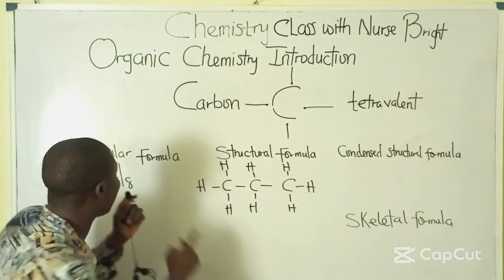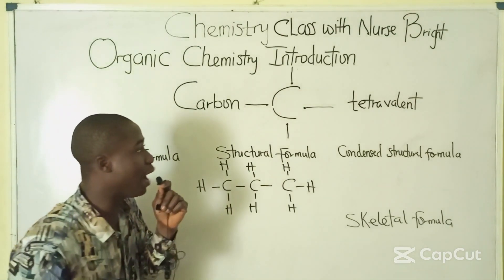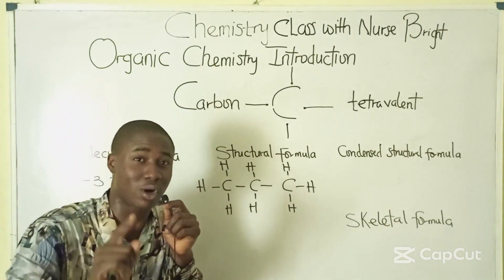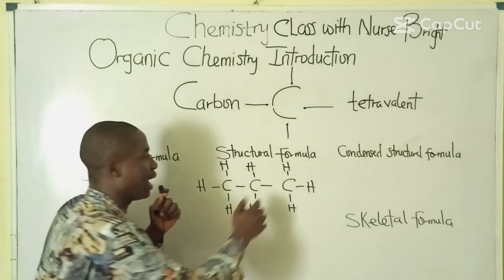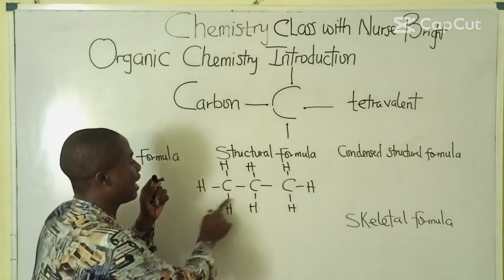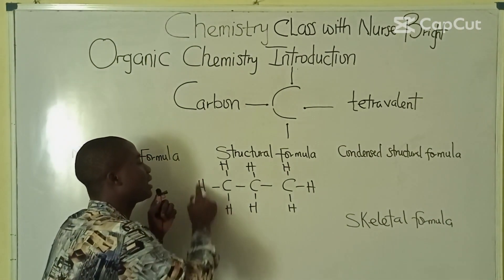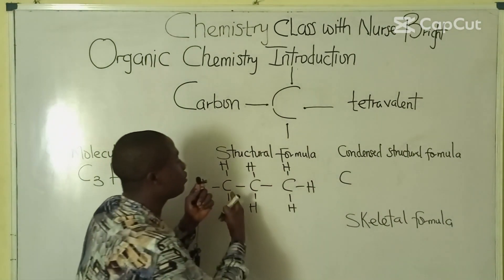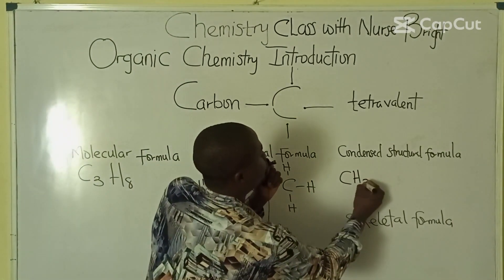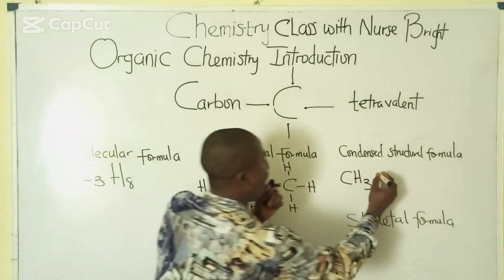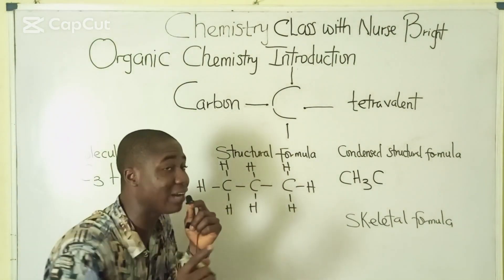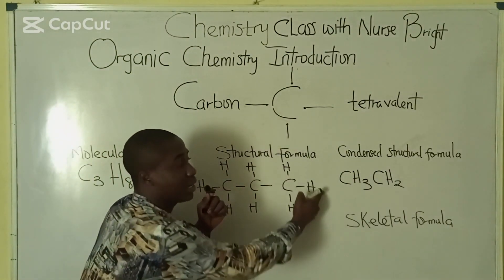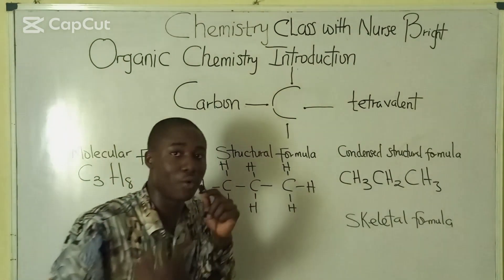This is the structural formula for C3H8. Now, moving over to the condensed structural formula — to write it, we simply use the structural formula. Looking at the left-hand carbon atom, it has three hydrogen atoms, so we write CH3. The next carbon atom has two hydrogen atoms, so it becomes CH2. And lastly, the final carbon gives us CH3. So the condensed structural formula is CH3CH2CH3.